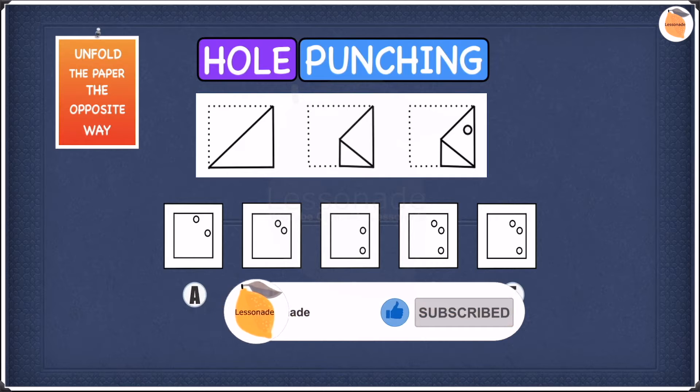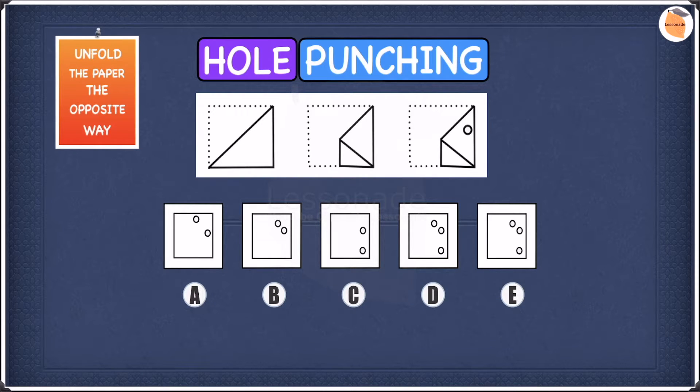Let's have a look at how the paper is folded at each of the figures. So let's start with figure 1. In figure 1, the paper has been folded into half on the diagonal line. It has been folded along this line diagonally. So the paper has been folded like this. That's figure 1 and let's move to figure 2.